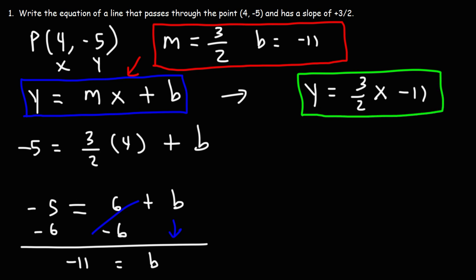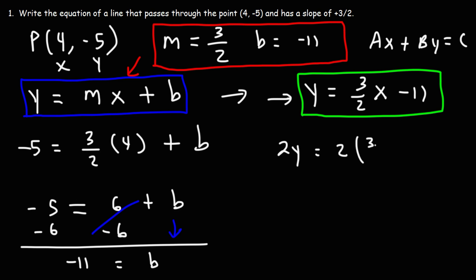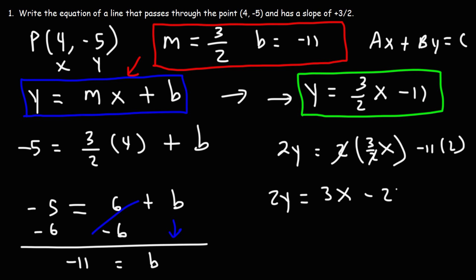Sometimes you may be asked to write the equation in standard form. Standard form looks like this: ax + by = c — in other words, x and y on one side and the constant on the other. Let's convert from slope-intercept to standard form. The first thing I would do is get rid of the fraction by multiplying everything by 2, giving us 2y = 2 · (3/2)x - 11 · 2.